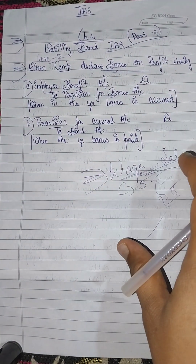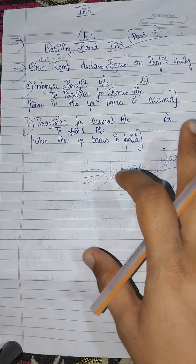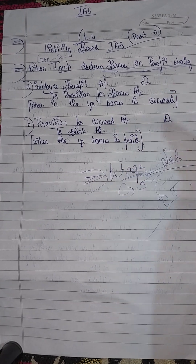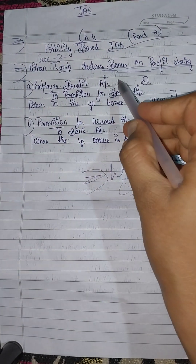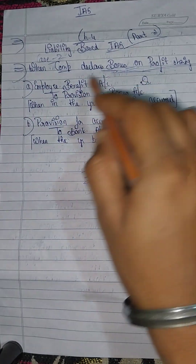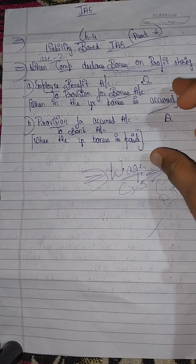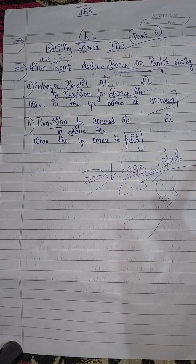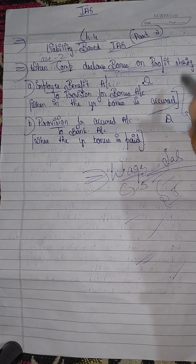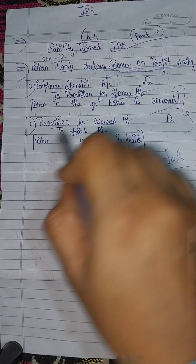Case 2 is simple. When the company declares bonus on profit sharing, this is the portion of bonus employees have to pay for. The first entry is: Employee Benefit Account debit to Provision for Bonus Account, when the bonus is accrued in the year.